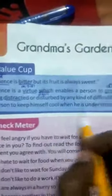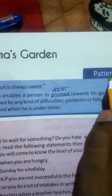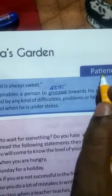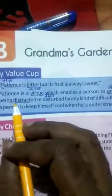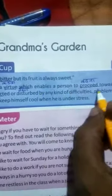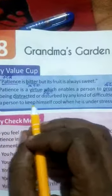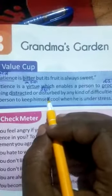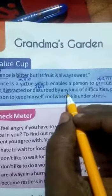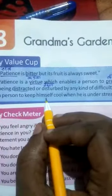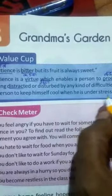Now we will see the moral value. The word is patience — patience means sabr, dheeraj, sahan shilta. Patience is a virtue which enables a person to proceed towards his goal without being distracted or disturbed by any kind of difficulties, problems, or failures. It helps a person to keep himself calm when he is under stress.